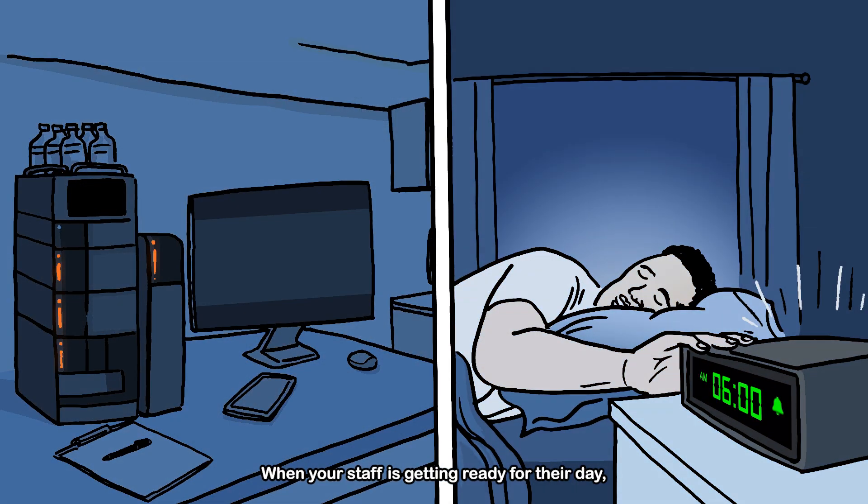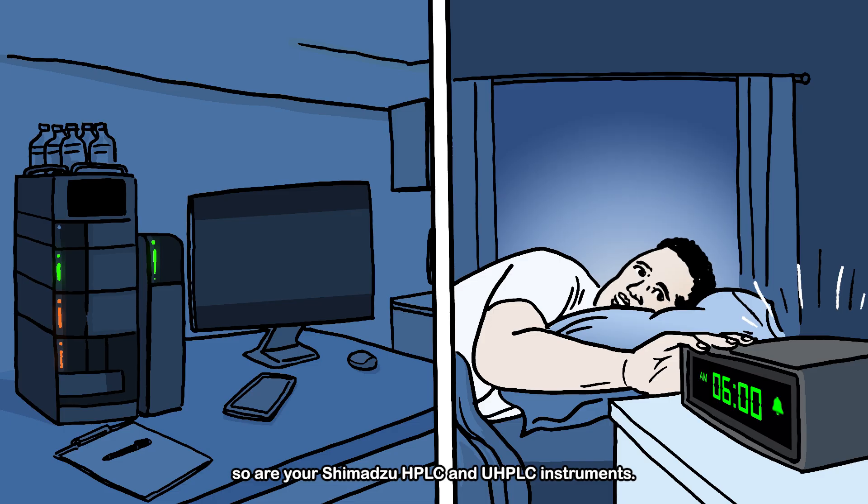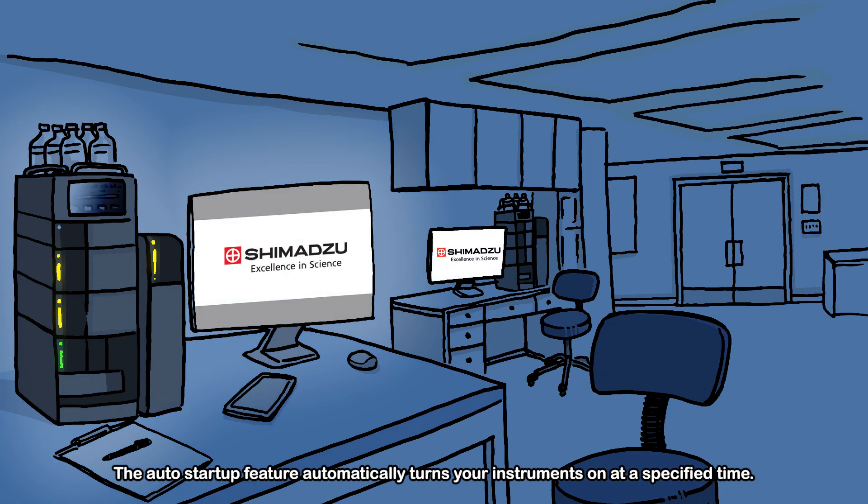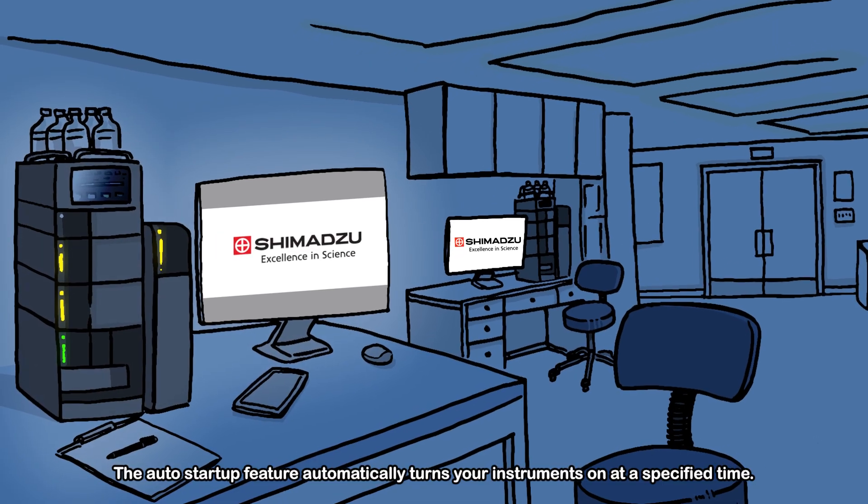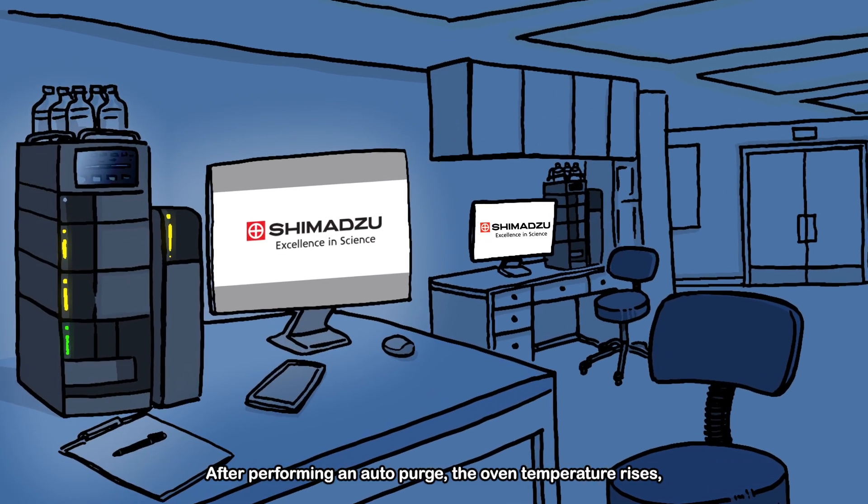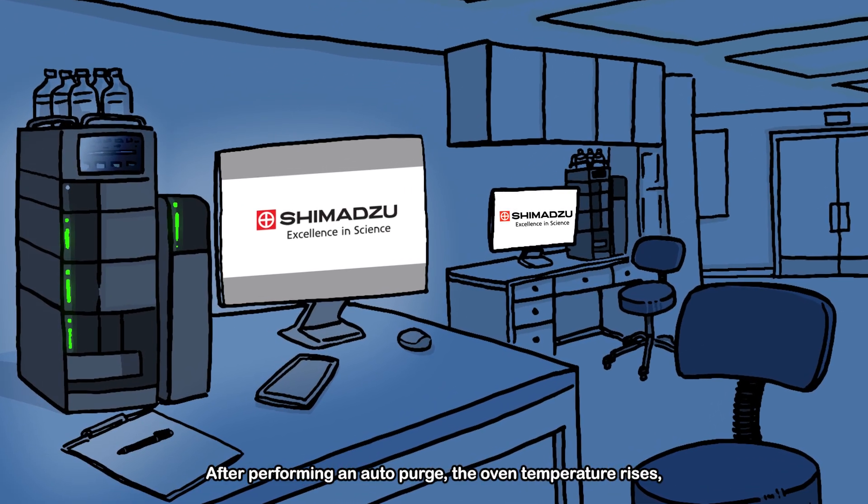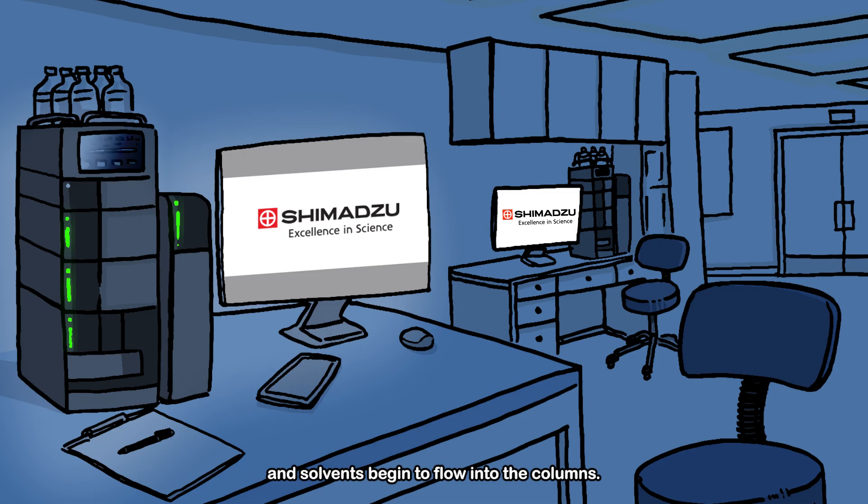When your staff is getting ready for their day, so are your Shimadzu HPLC and UHPLC instruments. The auto startup feature automatically turns your instruments on at a specified time. After performing an auto purge, the oven temperature rises and solvents begin to flow into the columns.